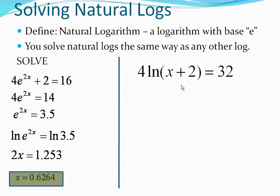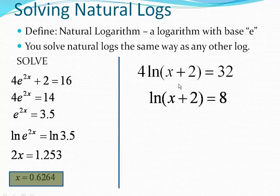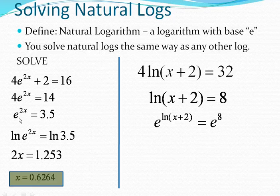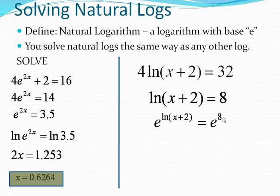So here we're going to do the exact same thing. First step, we've got to get the natural log all by itself, so we divide both sides by 4. Then we can take e of both sides, which is sort of like taking the natural log of both sides. We take e to both sides, e to the 8th over here on the right, e to the ln of x plus 2.